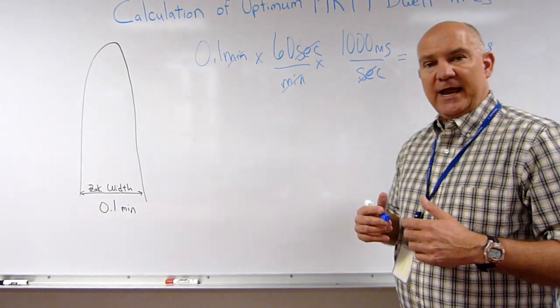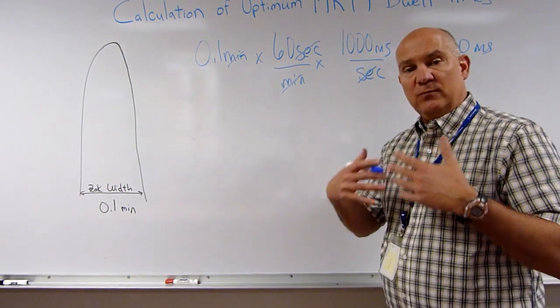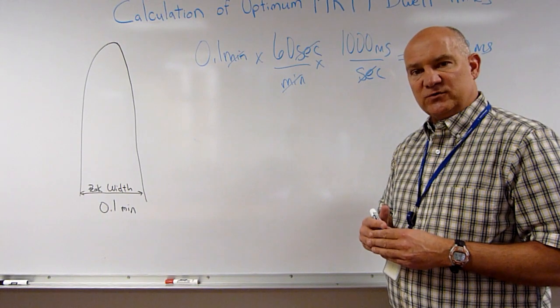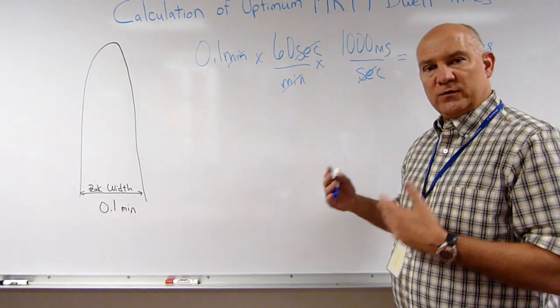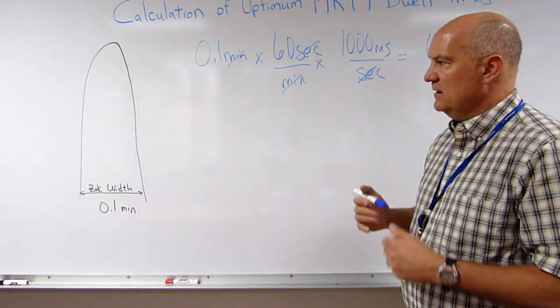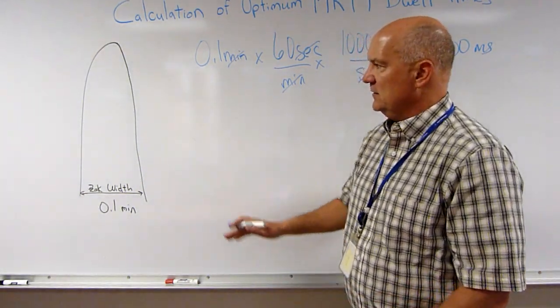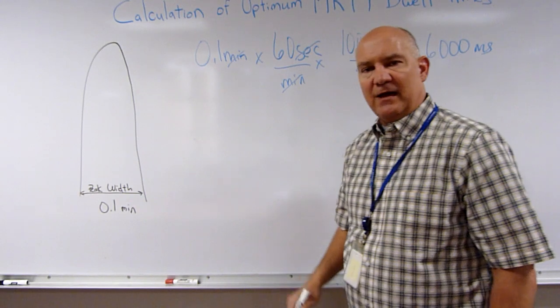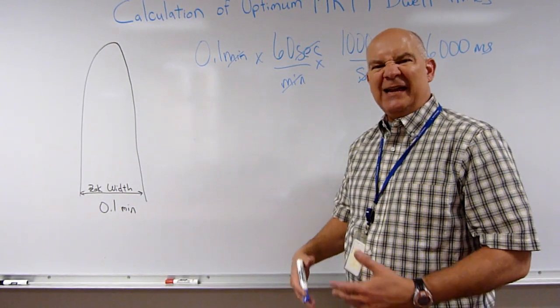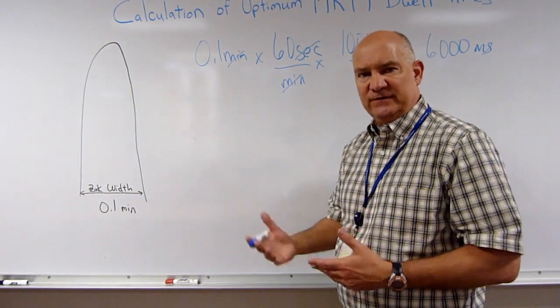If I have a method with multiple compounds and multiple transitions, this is going to further divide up my time. Mathematicians will tell us in order to accurately measure the profile of this chromatographic peak, I need a minimum of 12 data points.